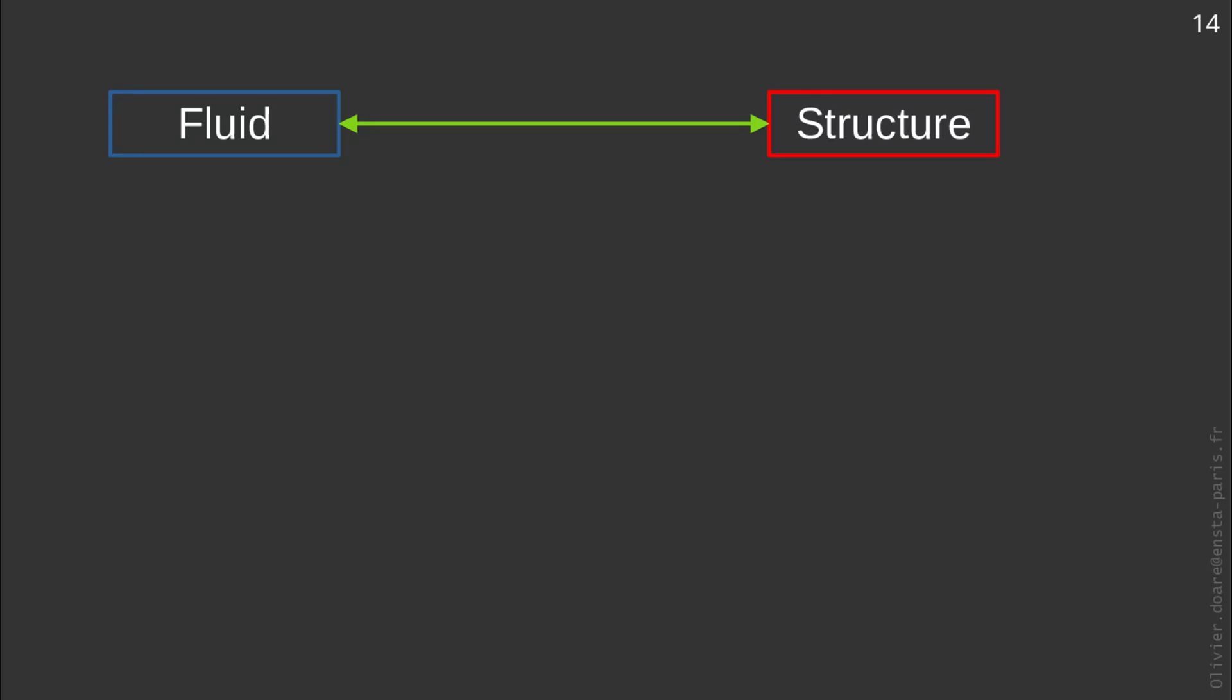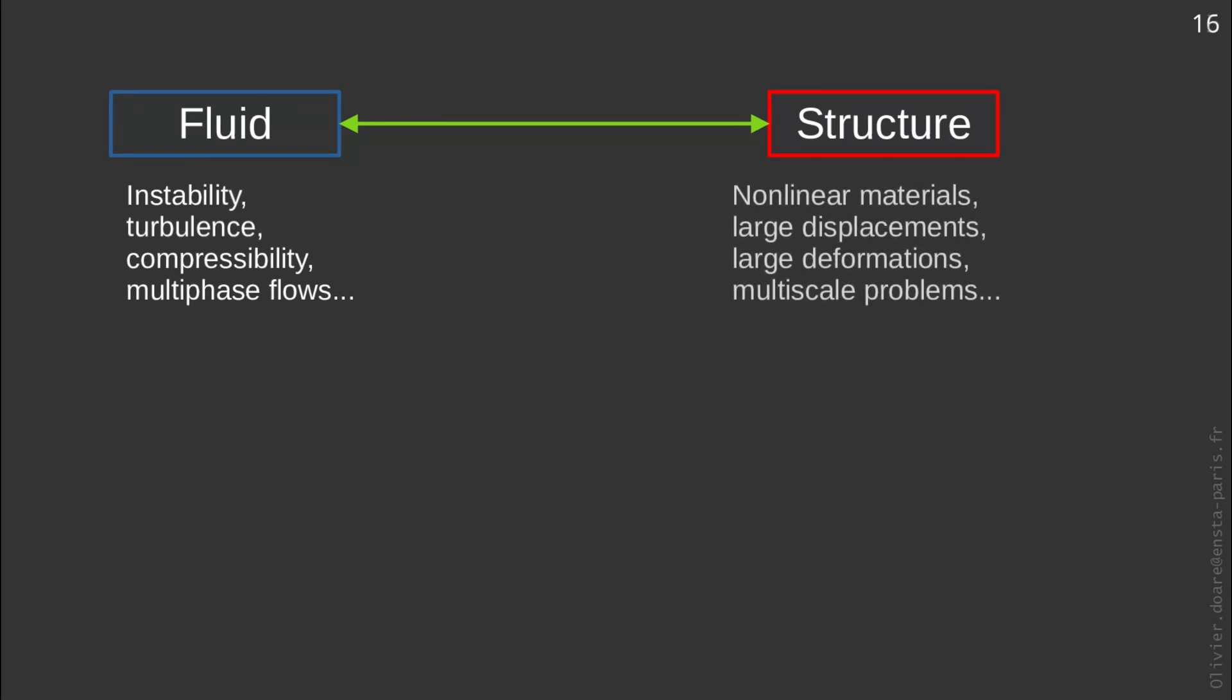Fluid mechanics and solid mechanics can therefore be strongly coupled. You know to what extent fluid mechanics can be a complex science as soon as one faces problems of instabilities, compressibility, turbulence. But solid mechanics can also be very complex if we are dealing with complex materials and geometries, large deformation or large displacement of structures.